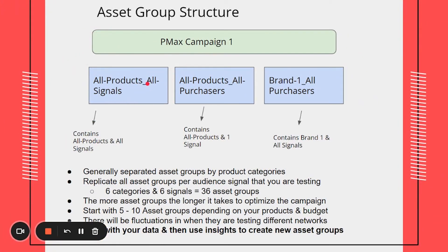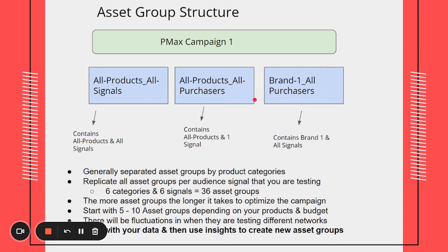Depending on the campaign strategy you use — one, two, or three — you want to make sure you have a few core asset groups. One will have all your products with all signals. One will have all your products with a single signal. And one will have one product category or brand with all signals. You want to test at least these three core types, then test signals for each category against this — for example, brand number two with all purchasers, brand number three with all purchasers, or people interested in football — and test each signal against each category to see what stands out.